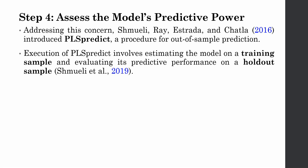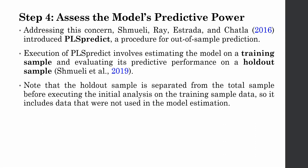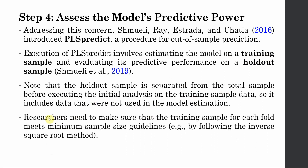Your whole dataset is divided into two sub-samples: one is your training sample and the other is your hold-out sample. The hold-out sample is separated from the total sample before execution of the initial analysis on the training sample, so it includes data that were not used in model estimation. Researchers need to make sure that the training sample for each fold meets the minimum sample size guidelines.